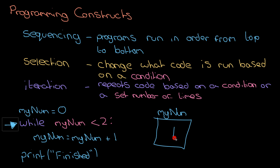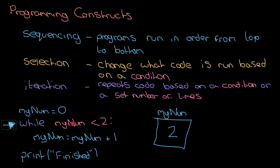Yes, my_num is one, which is less than two, so we run 'my_num equals my_num plus one' again — my_num is now two. We go back up and check: is my_num less than two? No, it equals two, so we exit the loop. The next line of code — 'print finished' — finally gets run. That's condition-controlled iteration.